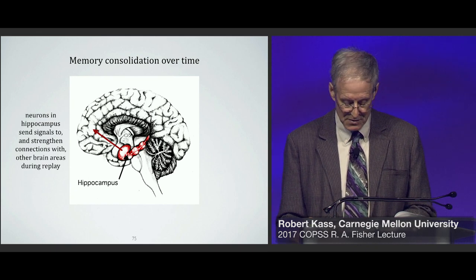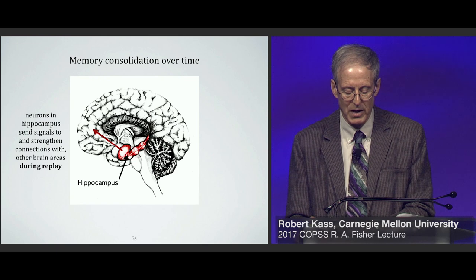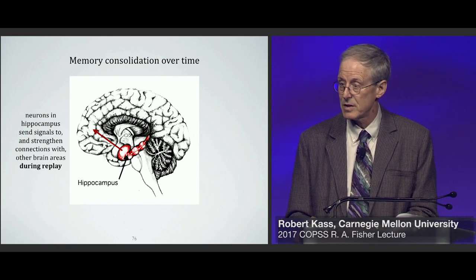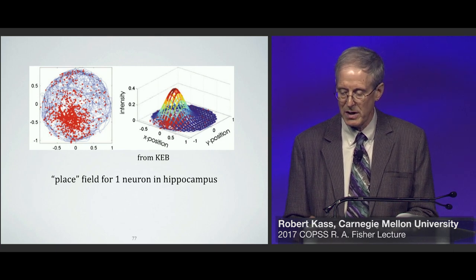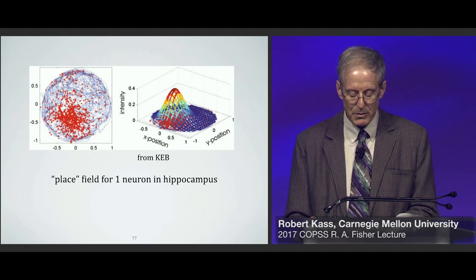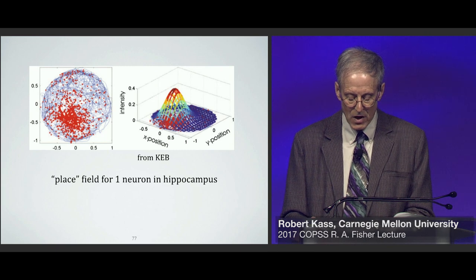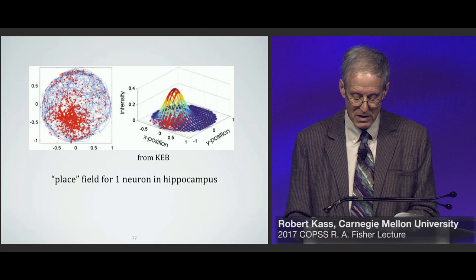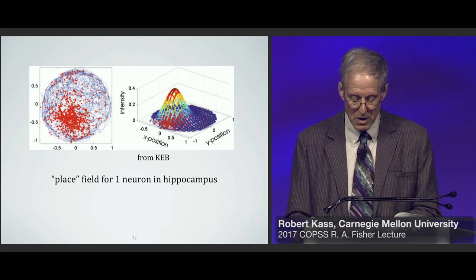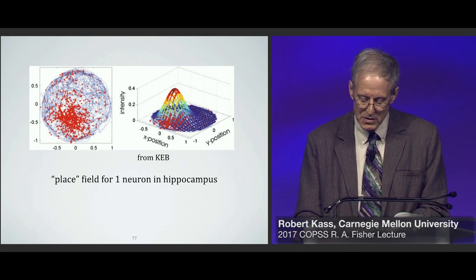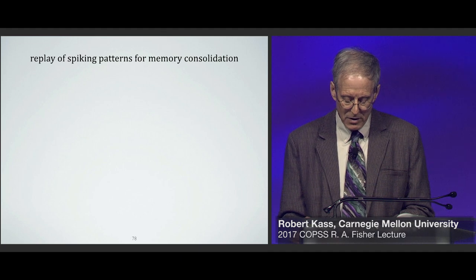Presumably, as neurons in the hippocampus send signals to and strengthen connections with other brain areas — thought to occur in a process of replay of firing patterns in the hippocampus — this may be one of the benefits of sleep or of non-sleeping rest. Here are two representations of data from a single neuron in the hippocampus of a rat while foraging in a circular pen after chocolate pellets had been sprinkled throughout. You can see the tendency for the neuron to fire whenever the rat ran through a particular location — a so-called place field — analogous to the receptive fields shown previously.